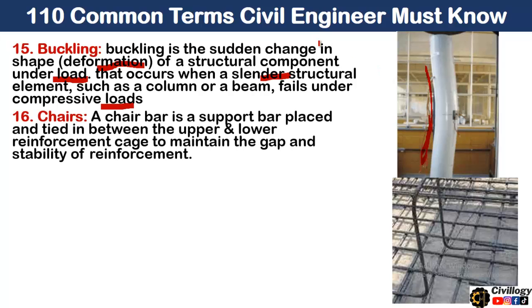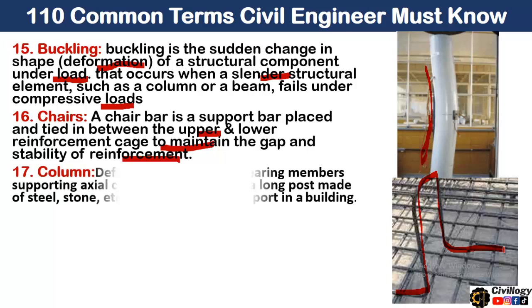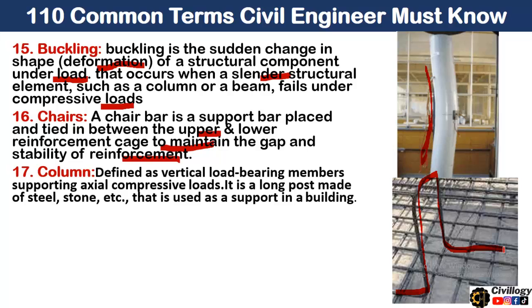Point 16 is chairs. A chair is a support bar placed and tied between the upper and lower reinforcement cage to maintain the gap and stability of the reinforcement. It is provided between the double mesh to maintain the distance between the top mesh and the bottom mesh.